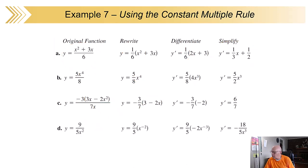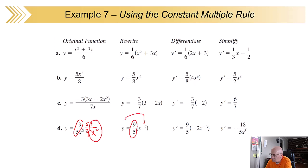For the fourth one: take the nine-fifths and leave that out front. Rewrite 1 over x squared as x to the minus 2, so we can use the power rule. Here's our nine-fifths times x to the minus 2. Take the derivative of x to the minus 2, do a little clean-up work, and we're finished — no quotient rule needed.